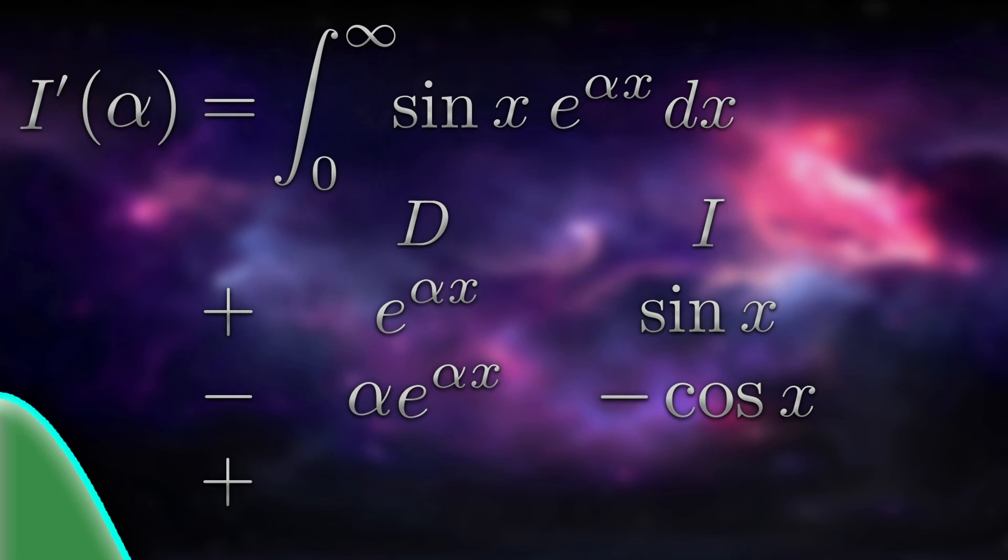Differentiating the D column and integrating the I column again. The next row is alpha squared e to the alpha x times negative sin x, which is negative alpha squared sin x e to the alpha x. We still don't know how to integrate this, but we can stop here, because this is a constant multiple of sin x e to the alpha x, which is what we were trying to integrate at the top. This means we'll be able to form an equation involving I prime of alpha, which we can then rearrange to find I prime of alpha. You'll see what I mean in a moment.